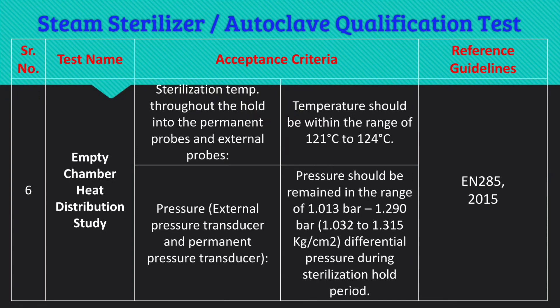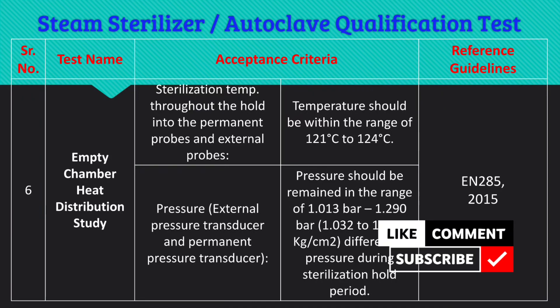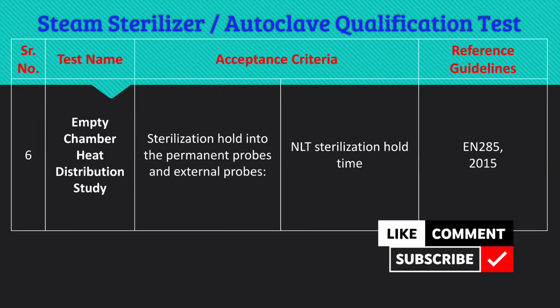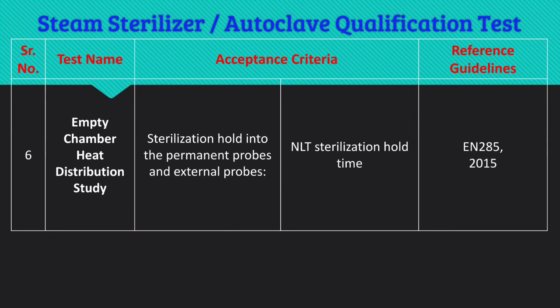Pressure measured by external and permanent pressure transducers should remain in the range of 1.013 bar to 1.290 bar; the pressure criteria depends on developmental studies and the finalized recipe. The reference guideline is EN 285:2015. The sterilization hold time in permanent and external probes should be not less than the hold time decided during cycle development — generally not less than 15 minutes as per EN 285.